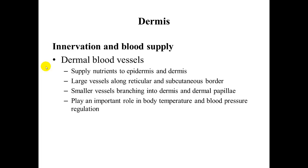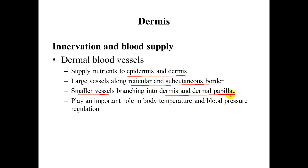We also have dermal blood vessels, which supply nutrients to both the epidermis and dermis. This is especially important to the epidermis because all epidermal tissue is avascular, so this is the only way it can receive the nutrients it needs. The larger vessels are along the reticular and subcutaneous border, with smaller vessels projecting inward into the dermis and dermal papillae.